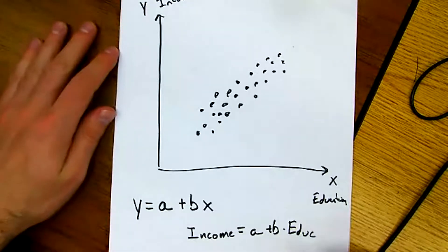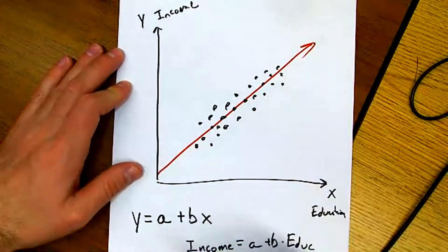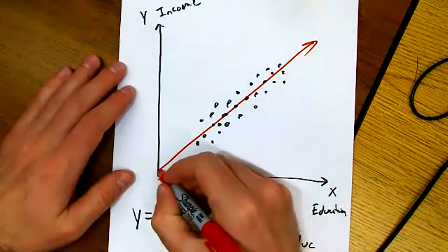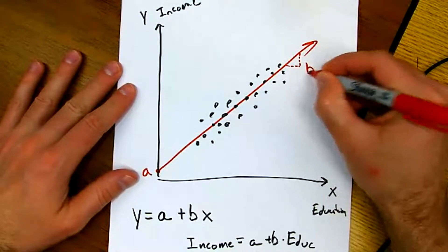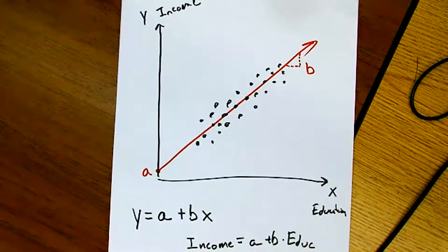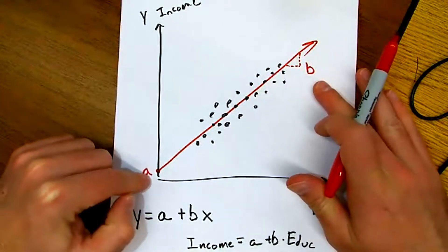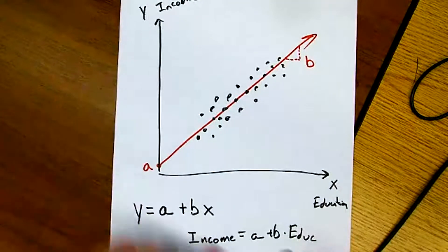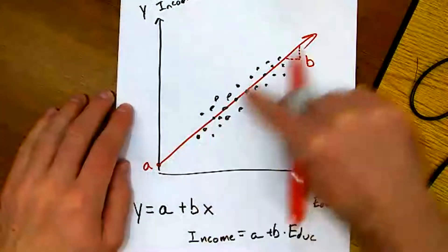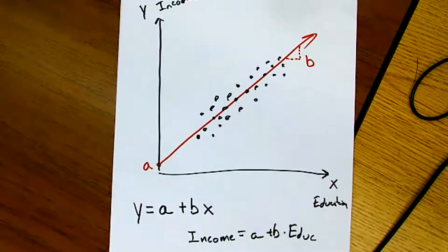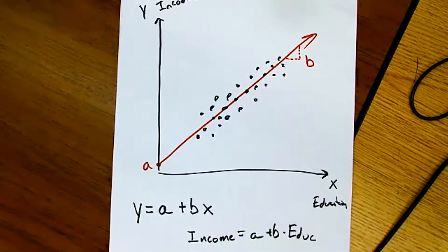I know that I could write out a linear relationship between my X and Y variable. Income is going to be some function of education. What are these A and B values going to be — the intercept and the slope? If I was able to draw a line that best fit that data, this line would have an intercept value, and we could calculate what the slope of that line is.